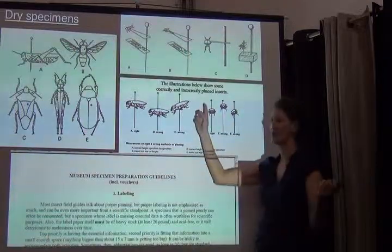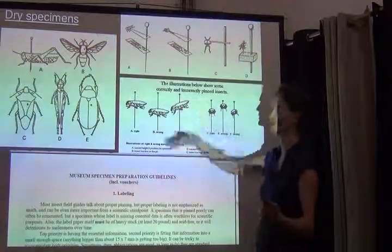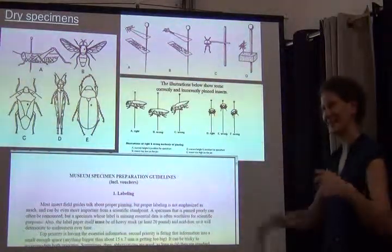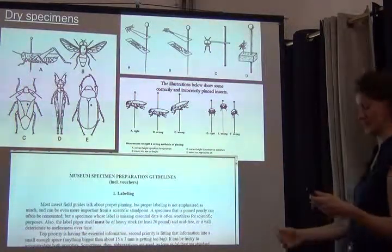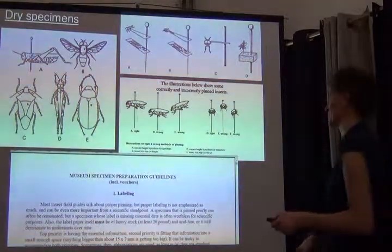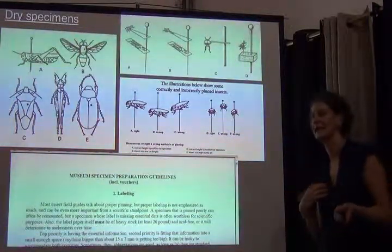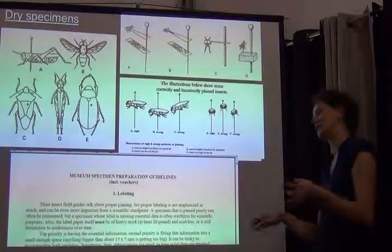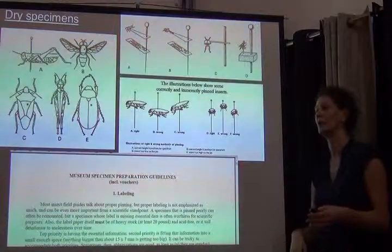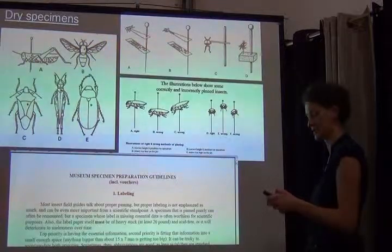Also in the age of imaging, if a specimen is crooked on the pin it's a nightmare to image — body parts end up in and out of focus. In our insect biodiversity class we devote an entire half-lab, about one and a half hours, going through preparation protocols, and students build their own collection based on these criteria.